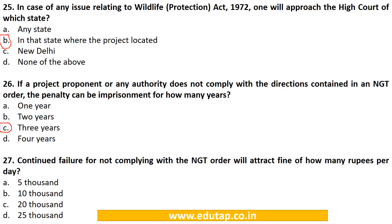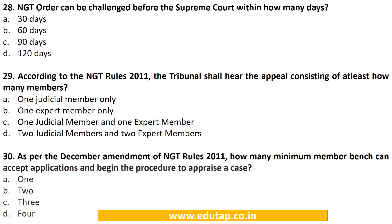MCQ 27: Continued failure to comply with an NGT order will attract a fine of how many rupees per day? A. 5,000, B. 10,000, C. 20,000, D. 25,000. The correct answer is D. Rs. 25,000. MCQ 28: An NGT order can be challenged before the Supreme Court within how many days? A. 30 days, B. 60 days, C. 90 days, D. 120 days. The correct answer is C. 90 days.